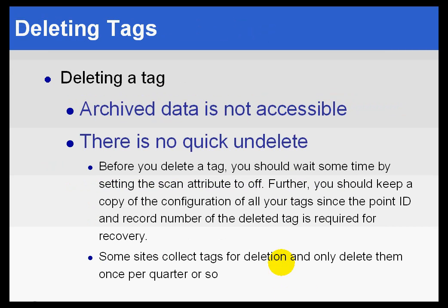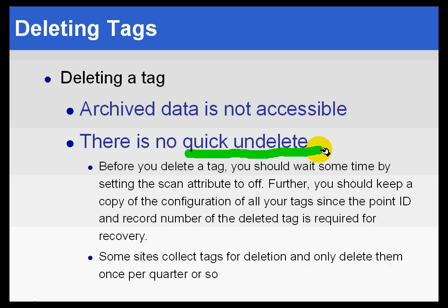Now, same for deleting a tag — deleting a tag is going to have some ramifications. First of all, it's going to affect all the archive data associated with that tag. To be careful about how we say that: we don't delete the archive data, we just make it so that you can't get to it anymore, which is more or less the same thing. Although it is possible to recover that situation, be very careful about deleting a tag. It's a nightmarish set of procedures you'll have to step through with tech support to recover the data from a deleted PI tag, and there is no quick undelete. Because it is such a severe problem if you delete the wrong one, we suggest you turn the scan attribute to off and see if anybody complains that they're not seeing that current data anymore.